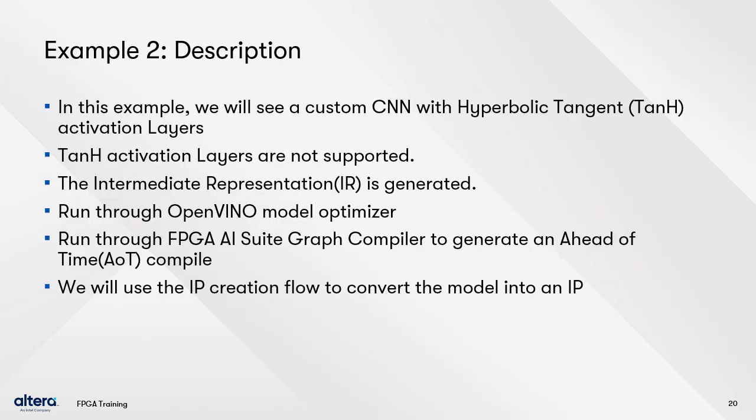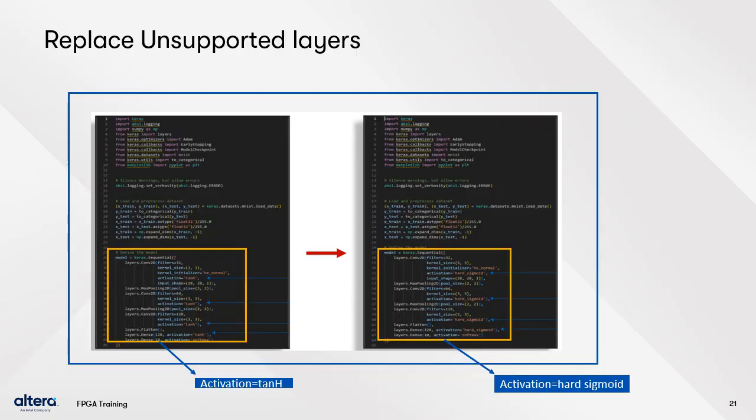In example two, we will see a custom CNN with hyperbolic tangent (TanH) activation layers. Since TanH activation layers are not supported, we will generate the IR model, run it through OpenVINO Model Optimizer, run it through the FPGA AI Suite Graph Compiler to generate an ahead-of-time compile, and use the IP creation flow to integrate the model into Quartus Prime. Because TanH layers are not run on the FPGA, the only supported option is heterogeneous execution, which may cause greater performance overhead due to additional subgraphs.